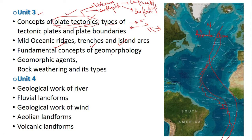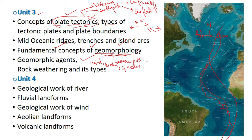We have the fundamental concepts of geomorphology — some laws and concepts which form the basis of geomorphology. Then we have geomorphic agents: wind, running water, glaciers, underground water, and so on. We'll be learning about each geomorphic agent separately. Also included is rock weathering and its types. With that we come to an end of unit three.